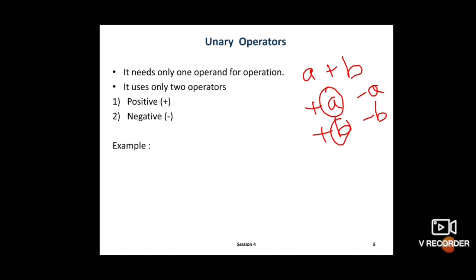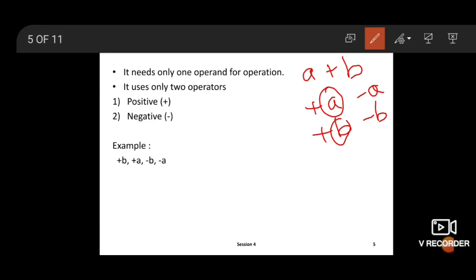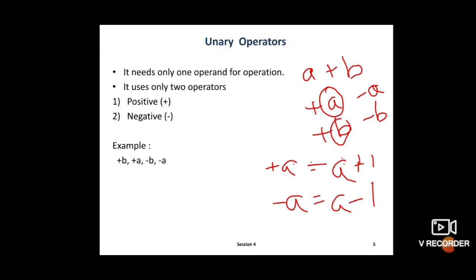What is the meaning of +A, -A, +B, or -B? Plus A is equivalent to A = A + 1, meaning increment by 1 from the previous value. And minus A is equivalent to A = A - 1, meaning decrement by 1, or subtract 1 from the previous value. So if plus, add 1 to the previous number; if minus, subtract 1 from the previous number.